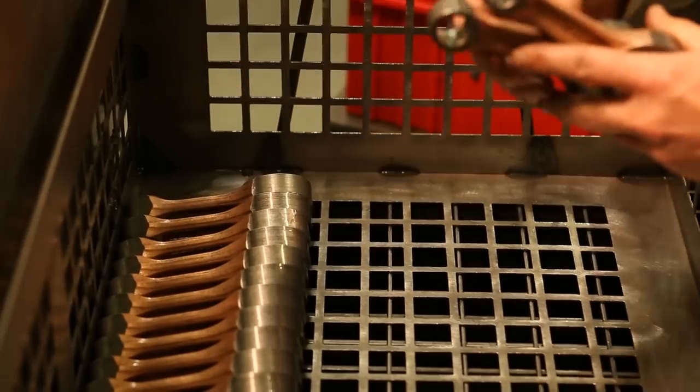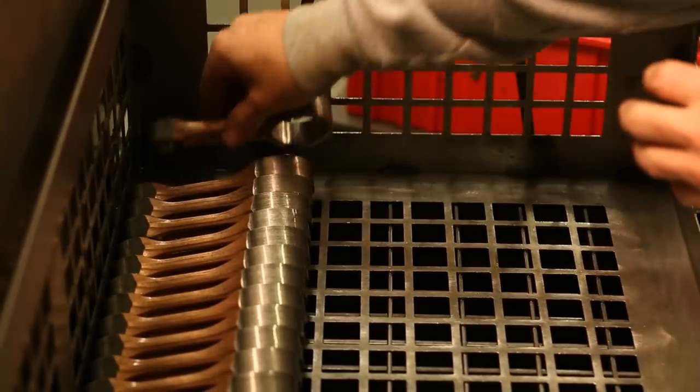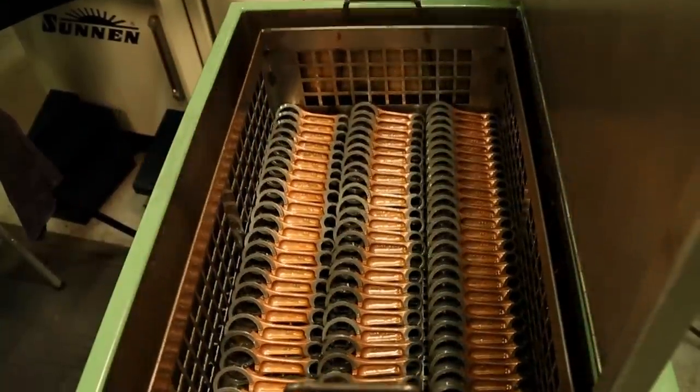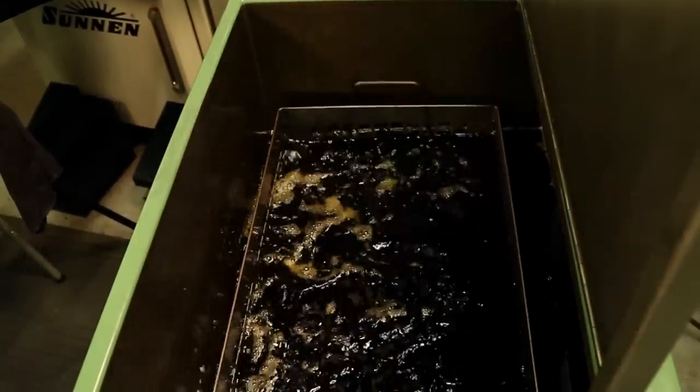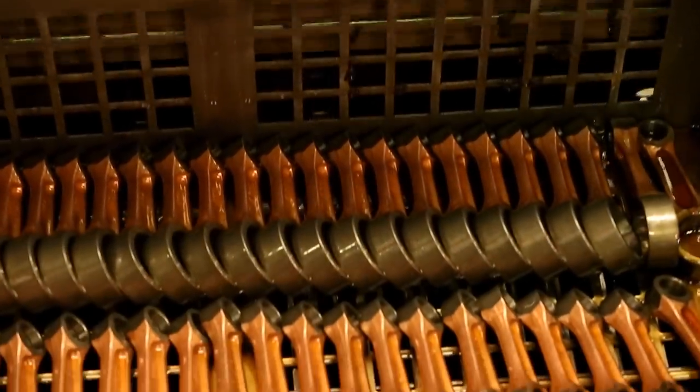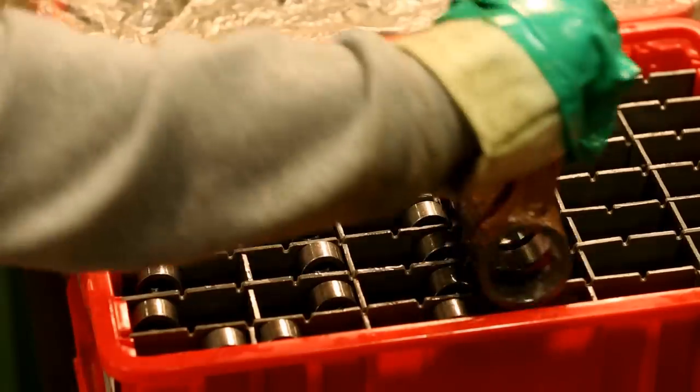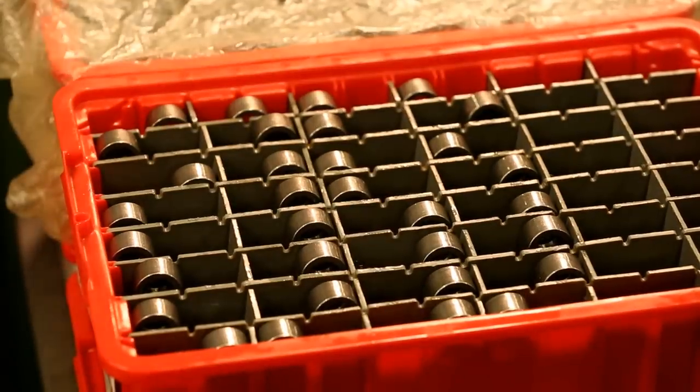The rods are then dunked in an anti-rust bath to protect them from corrosion. Agitating the rods in an anti-rust bath protects the rod from oxidation and moisture until it is ready to use. After this process, to prevent any oxidation from the salts and oils in our skin, the rods are only handled by personnel wearing rubber or latex gloves.